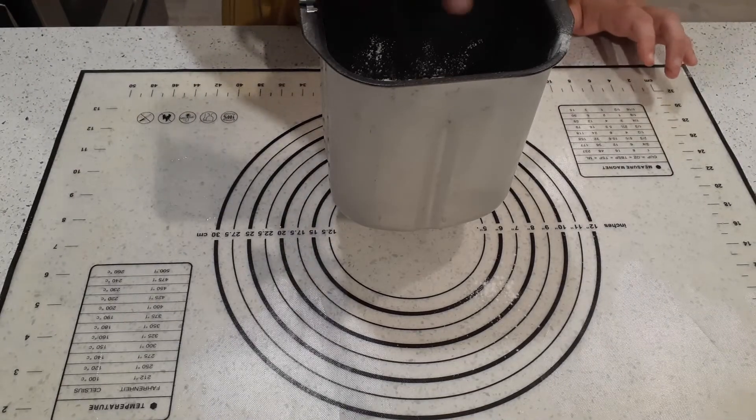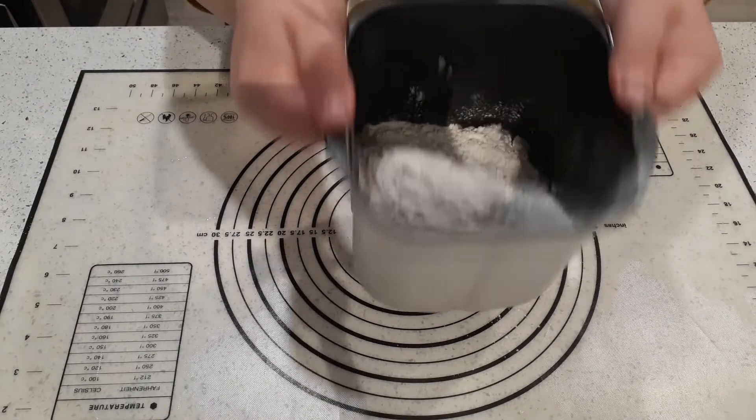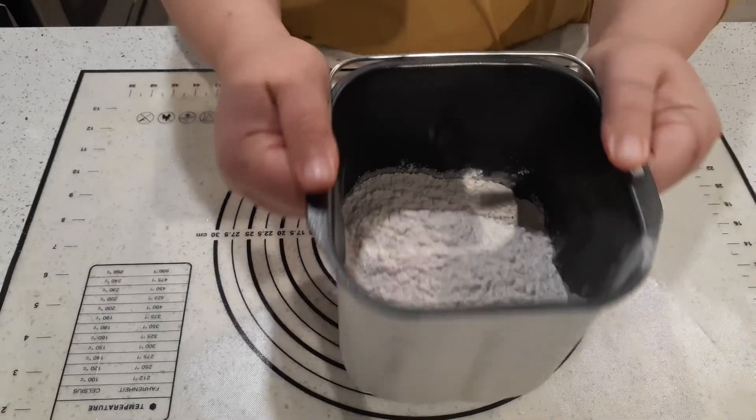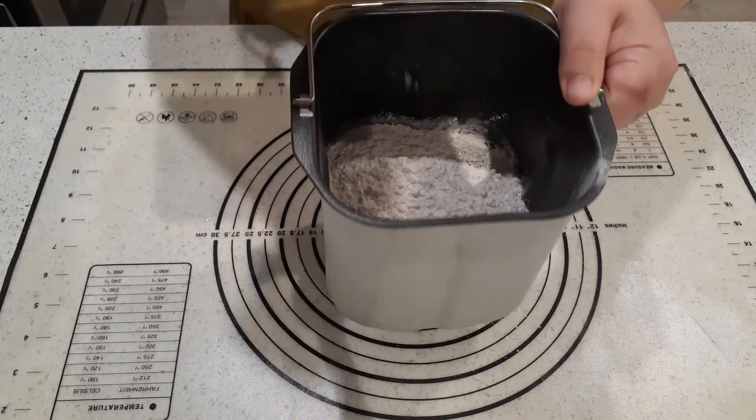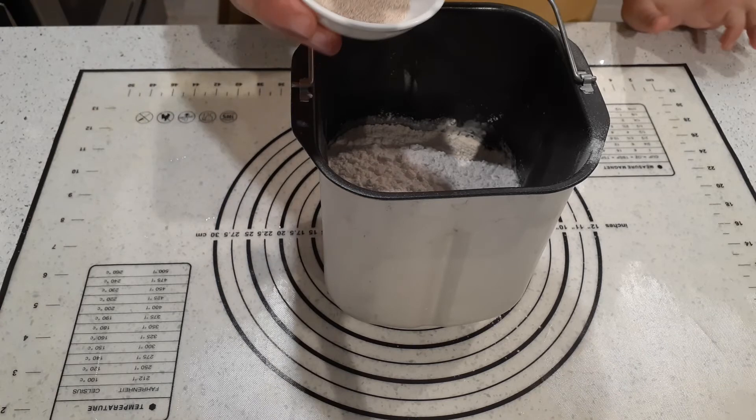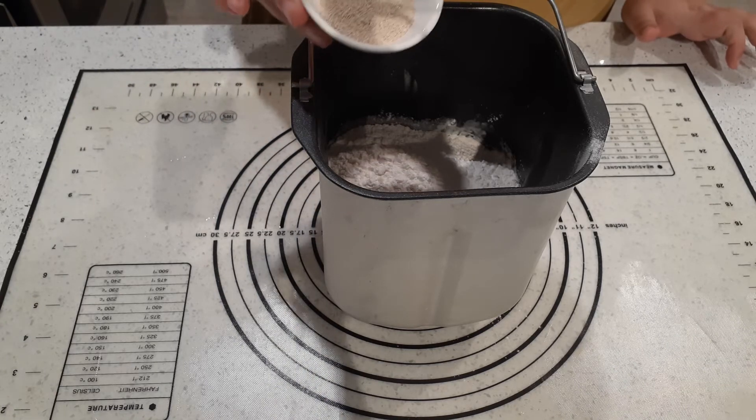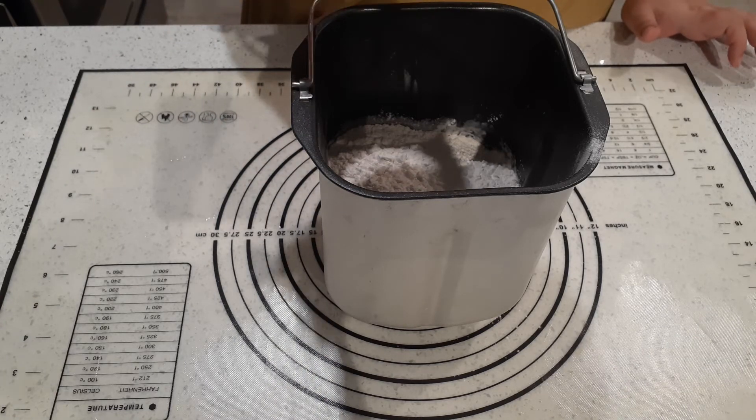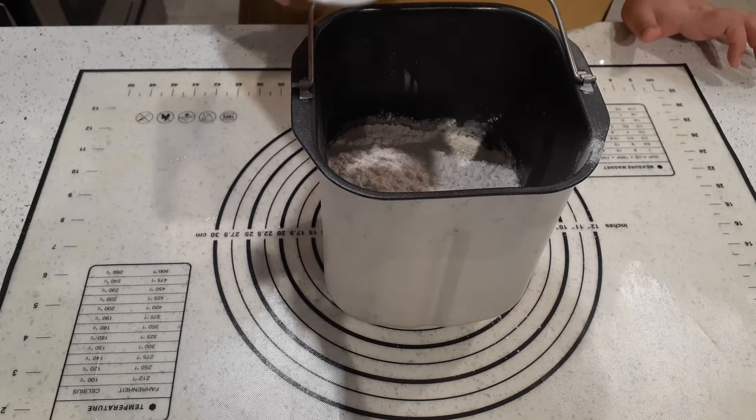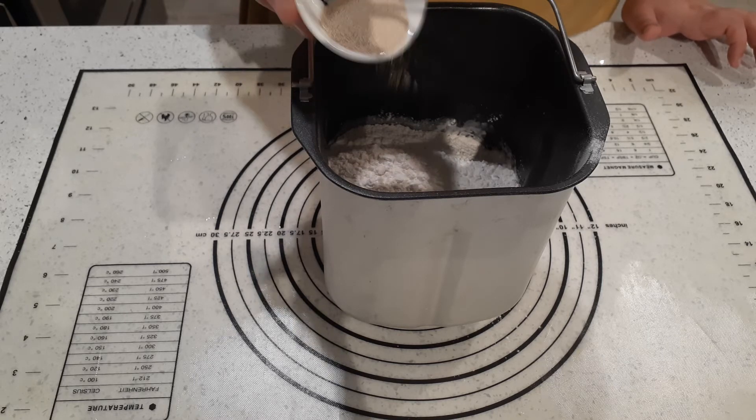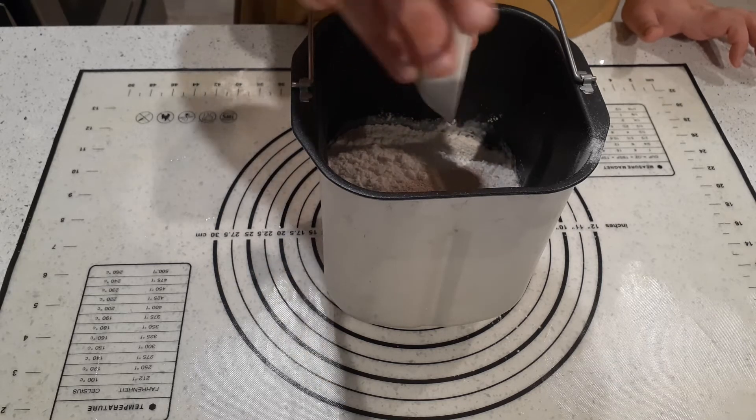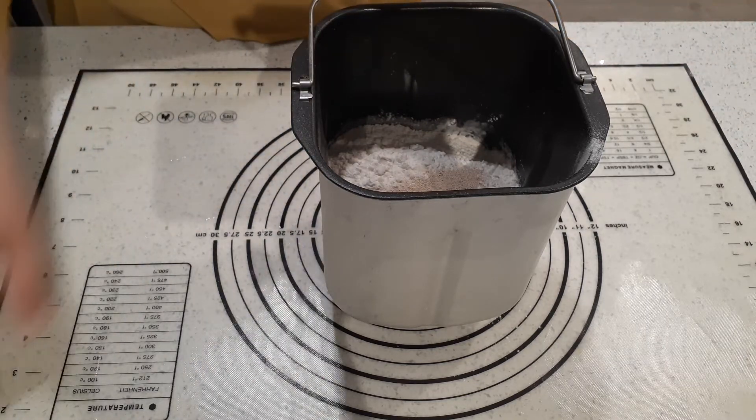Then you add your flour. Here is where you would add a cheese if you were adding cheddar cheese or something. Give this a shake to flatten that out. You want your flour completely covering your water because next goes your yeast. You want to use a bread machine or a quick rise yeast. Don't use traditional yeast; it doesn't break down fast enough for the bread maker because you're not pre-dissolving. So you just put your yeast on top of the flour. Make sure yeast doesn't touch the water; that's why we flattened out the flour.